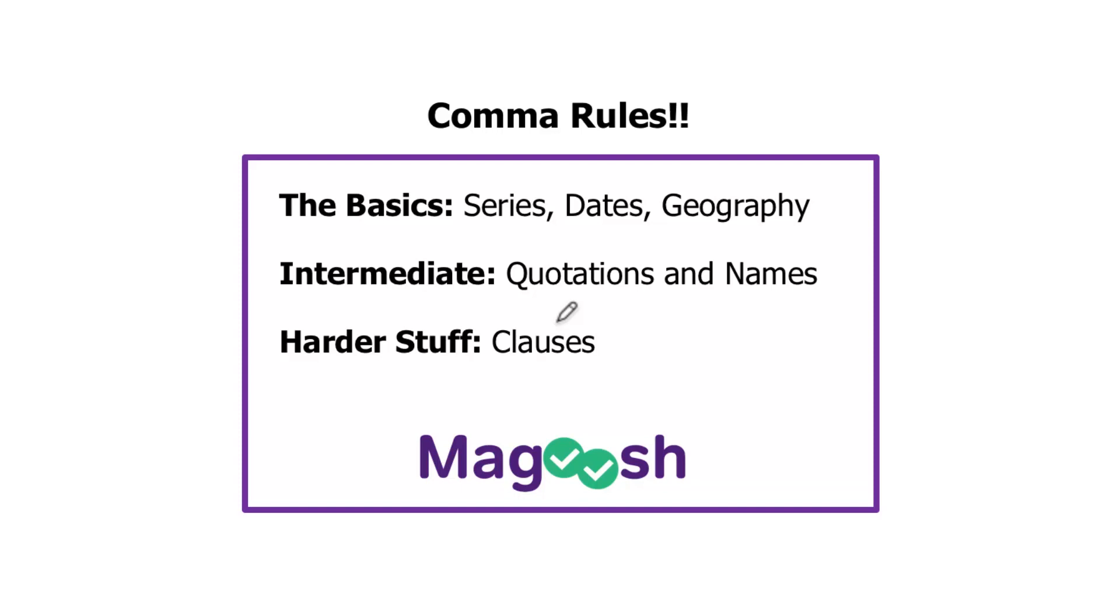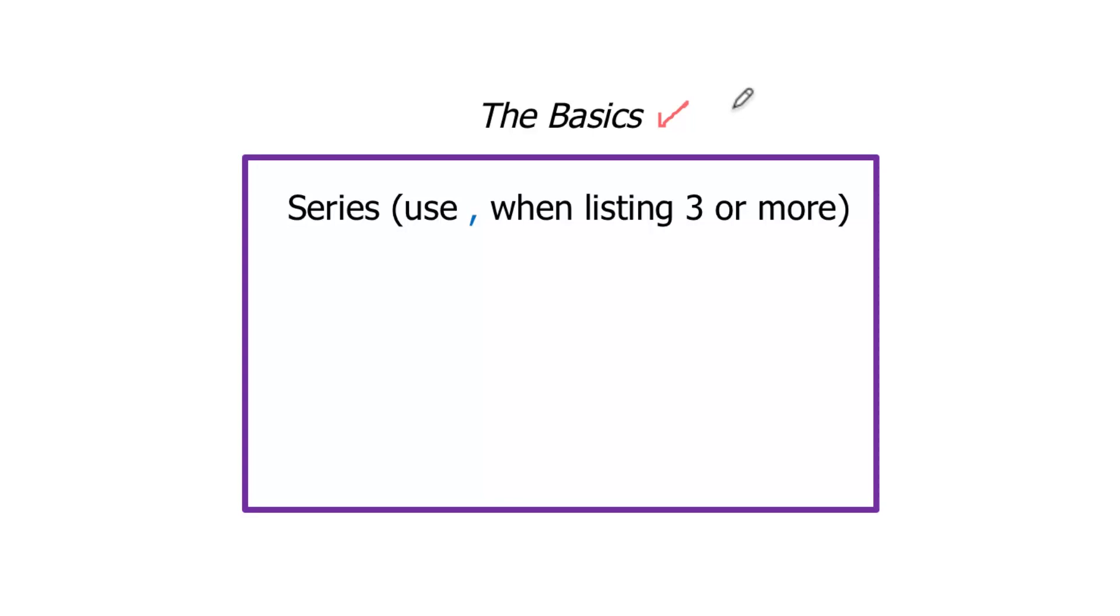So starting here with the basics, one of the first things we learn about commas is that they're used to separate items on a list. Specifically, if we have three or more items, these could be nouns, adjectives, events. We use commas after each of the descriptions. My best friend is tall, smart, caring, and a bit twisted. And there is a comma after each one.